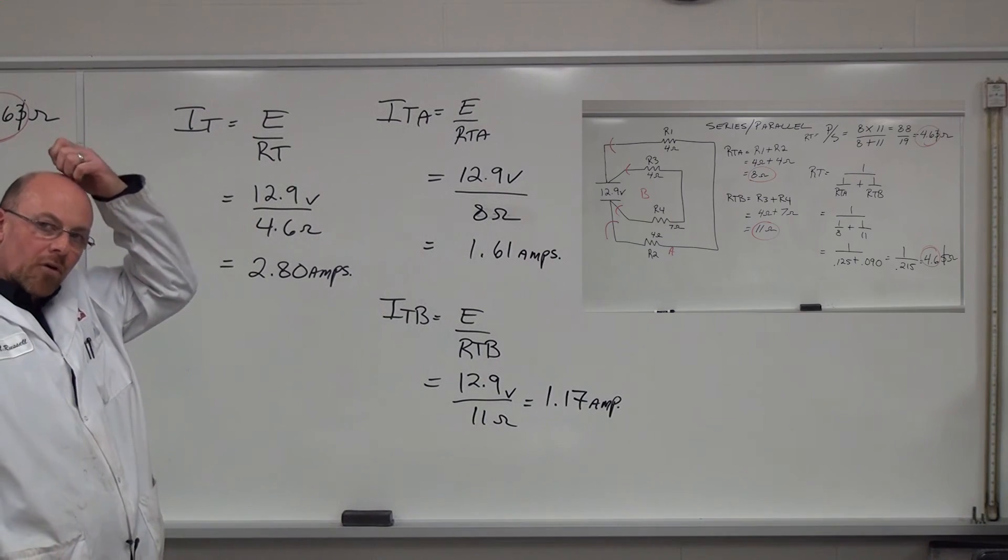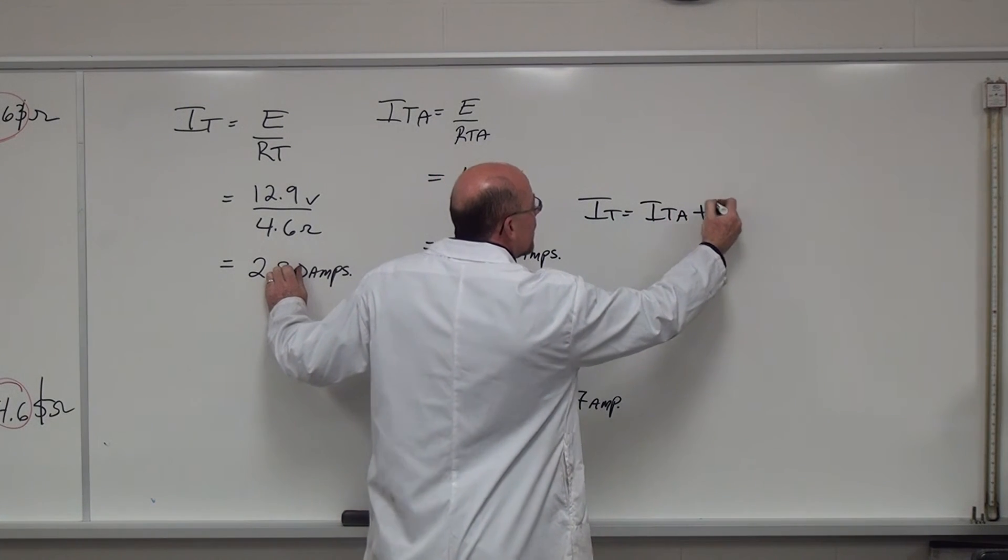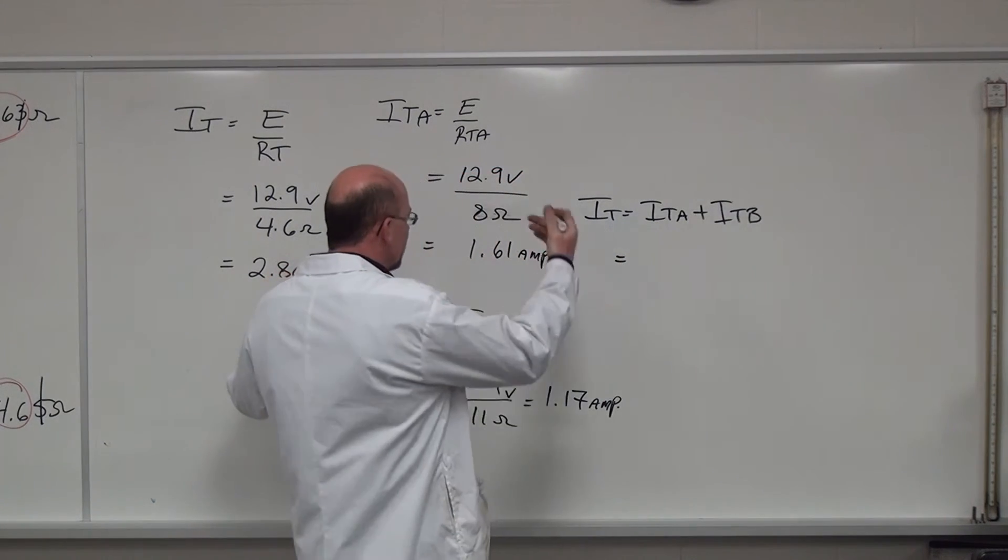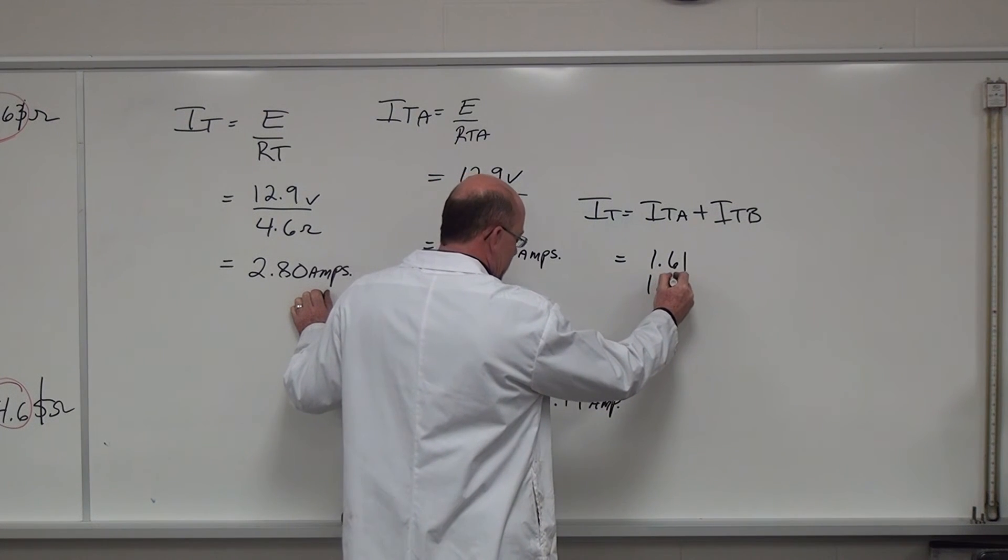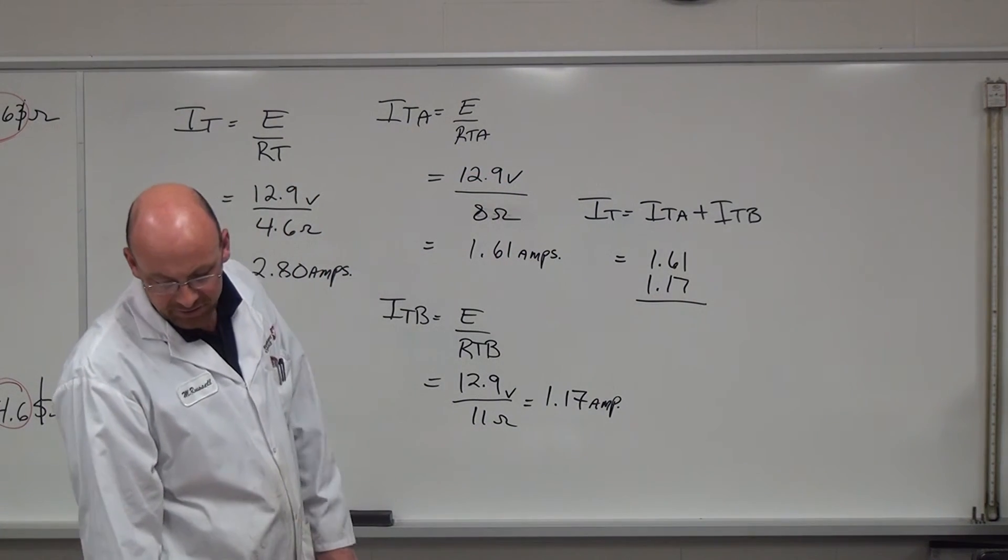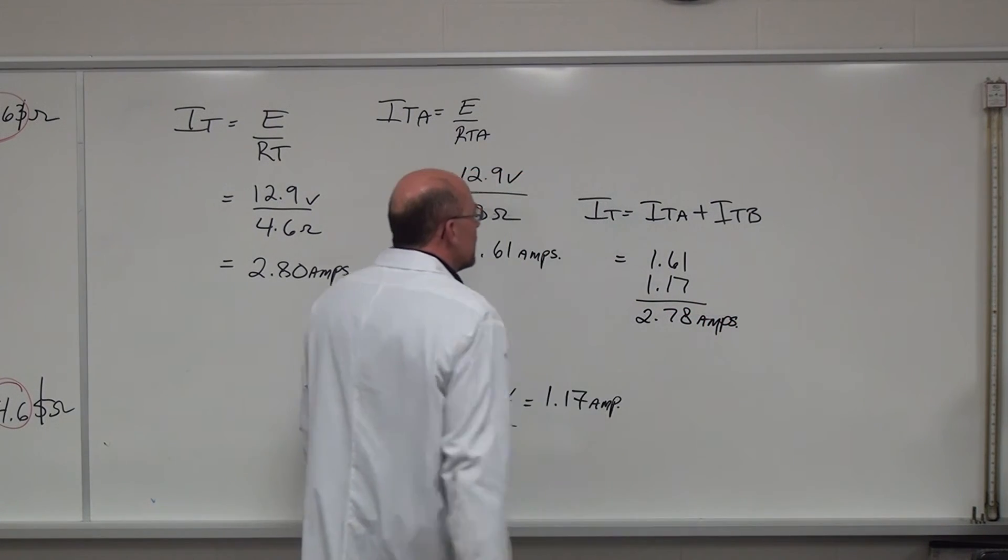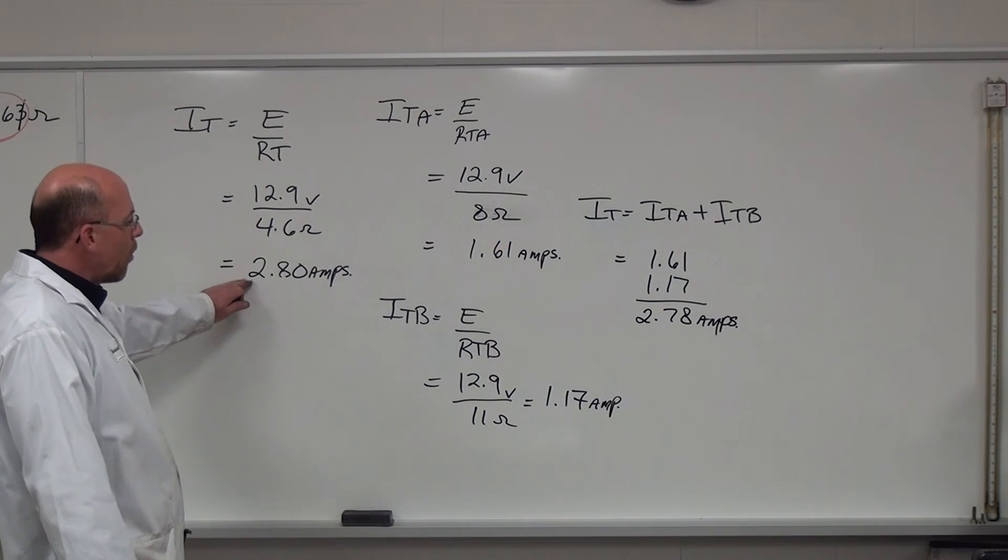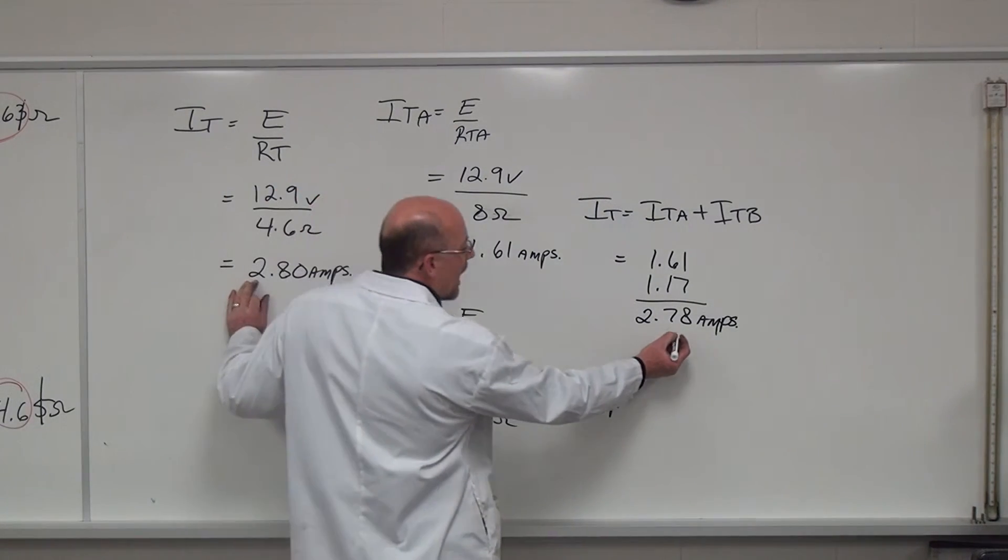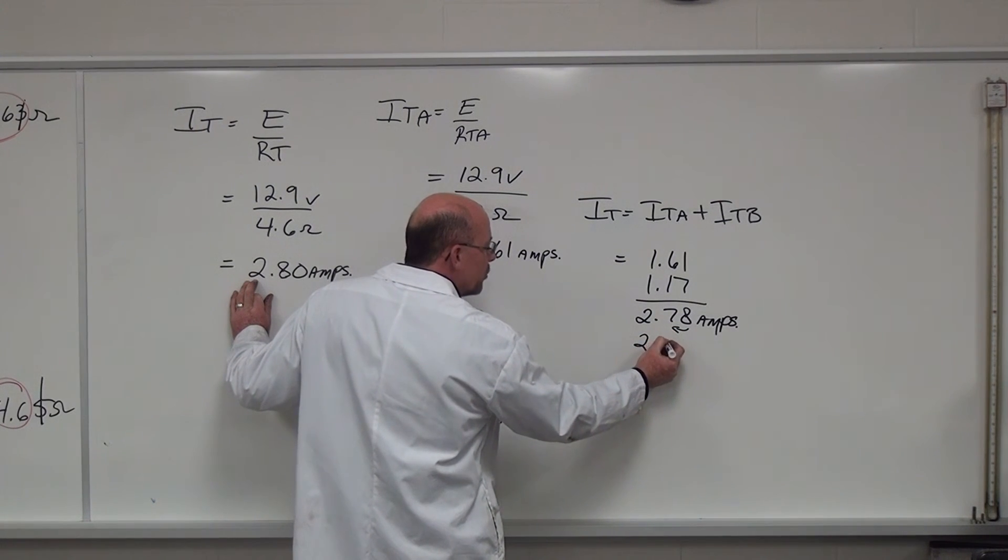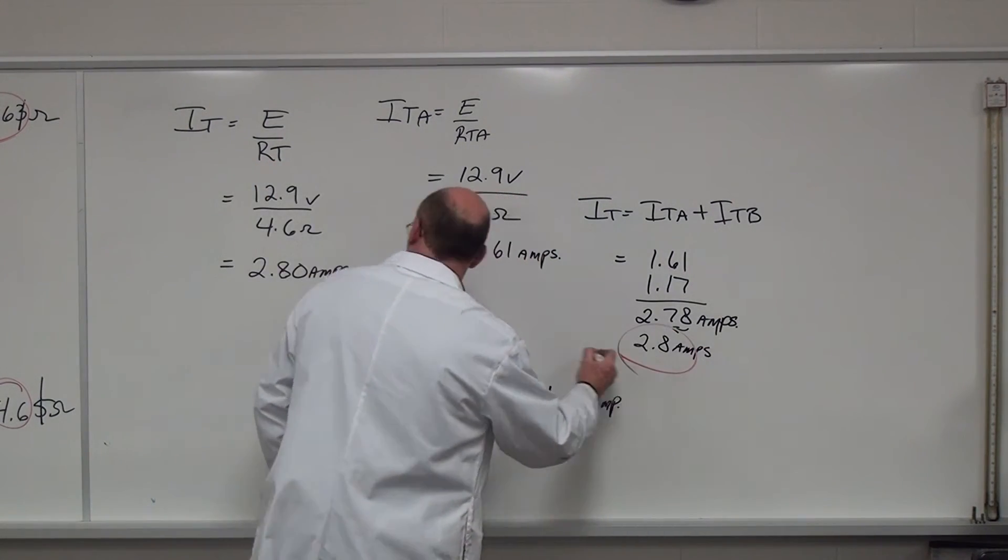So now if we take a look at the overall IT in this circuit, IT equals ITA plus ITB. And if we plug them in, I'm just going to put them on top of each other: 1.61 for ITA, ITB is 1.17, add the two of them up, calculates out to 2.78 amps. So again, if we take a look at what we have for the overall amount of amperage over here for IT, it calculated out to 2.80 amps. If I was to round up, then we could actually make this 2.8 amps. And the two of them, again, are the same when we calculate.